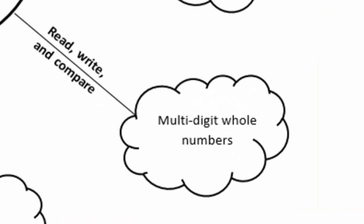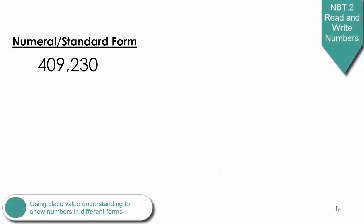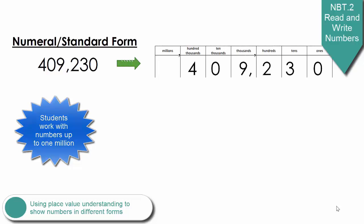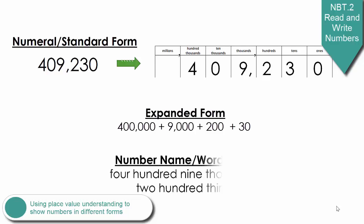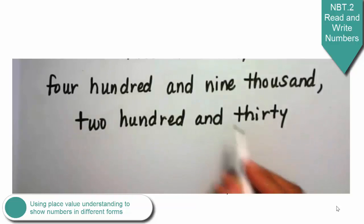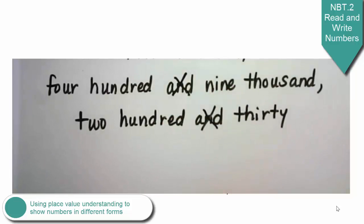Next we will zoom in on reading, writing, and comparing multi-digit whole numbers. In this unit, students will write numbers in various forms, one being standard form or in numerals as the number 409,230 is shown here. Using a place value chart may help students with writing the number in expanded form, which requires them to show the value of each digit in the numeral, as well as writing numbers in number name or word form, which requires the proper placement of commas. Also notice that the word AND is not used between whole numbers. For example, 230 should not be said or written as 200 AND 30. The same goes for 409.